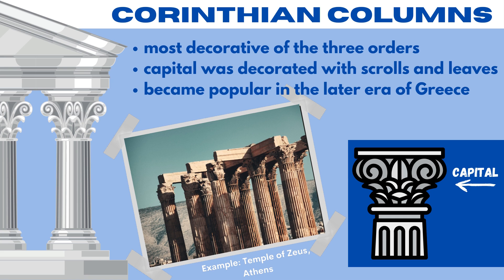Our fanciest columns are the Corinthian columns, which come from the city-state of Corinth. Corinthian columns are the most decorative of the three Greek orders. One memory trick: Corinthian is the longest word, so it has the most to it. The capital, or top, of the Corinthian column is decorated with scrolls and leaves. These came about in the later era of Greece — if Doric is the first, Corinthian would be the last. Looking at the ruins from the Temple of Zeus in Athens, we can see these Corinthian columns with very fancy capitals, showing just how important Zeus was.